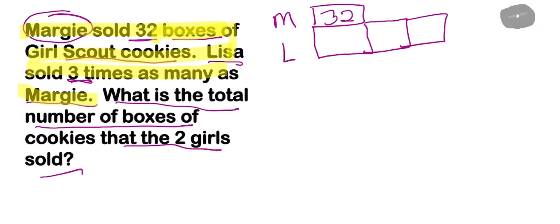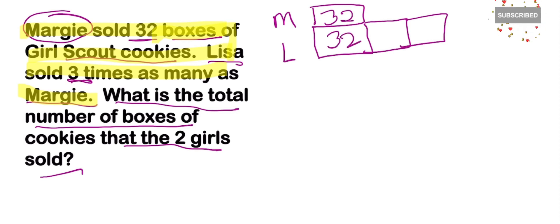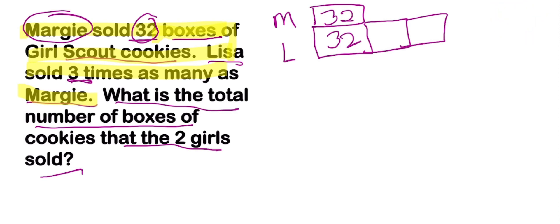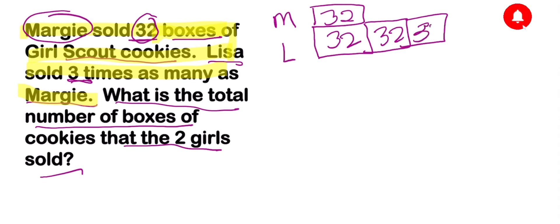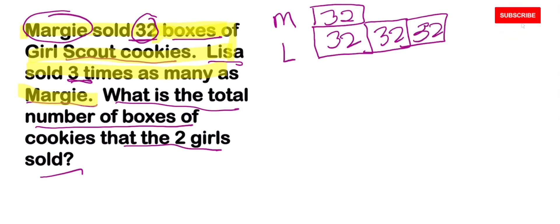Wherever you see a box, we're going to represent it with 32, because if Margie sold 32 boxes and Lisa sold three times as many, that means Lisa sold three sets of 32. Now that we know how much Lisa sold, we can go ahead and find the total.